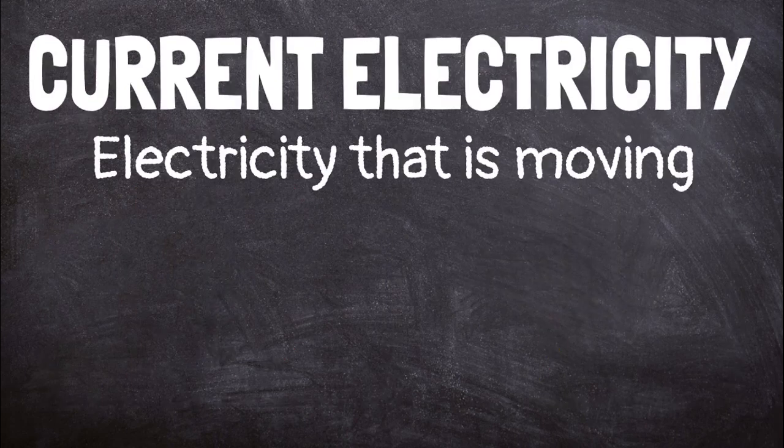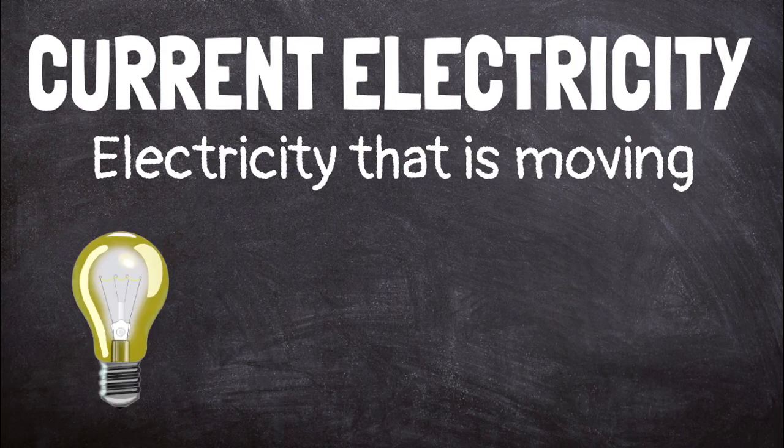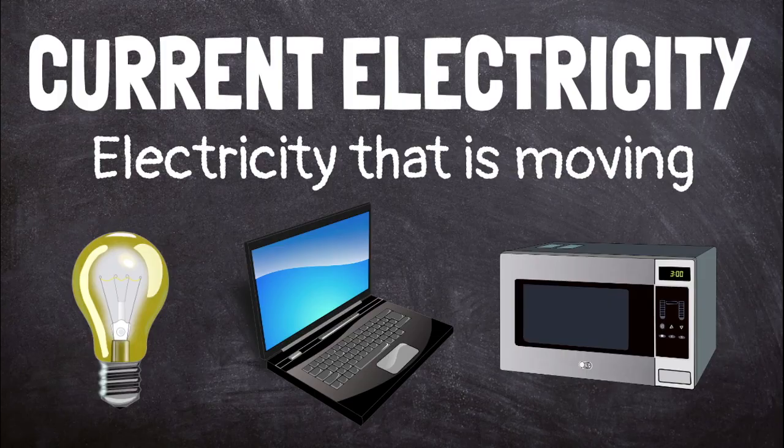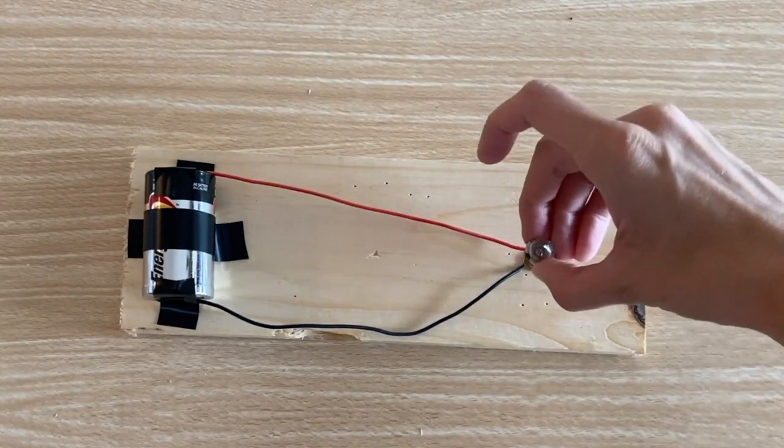Current electricity is electricity that is moving. This is the type of electricity that powers our appliances and devices. For the electricity to move, it needs a closed circuit.